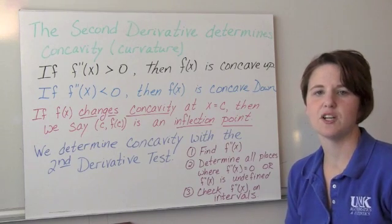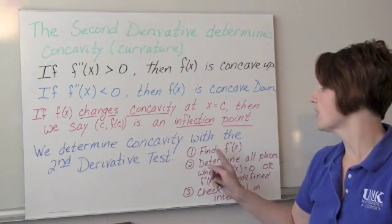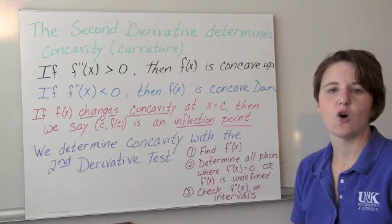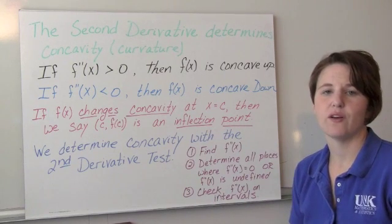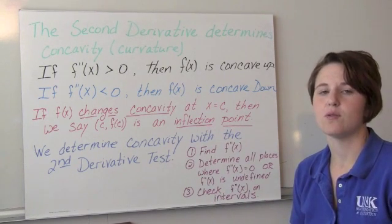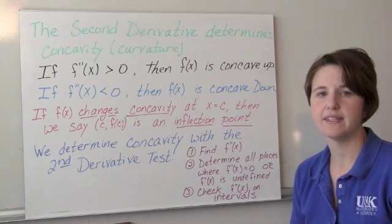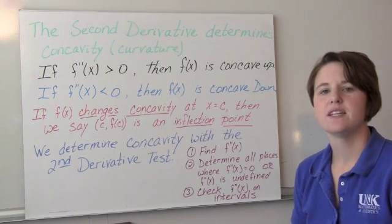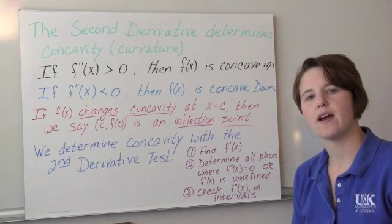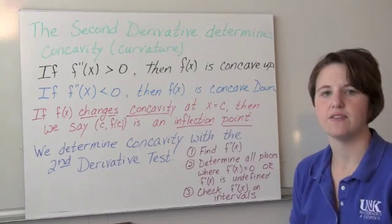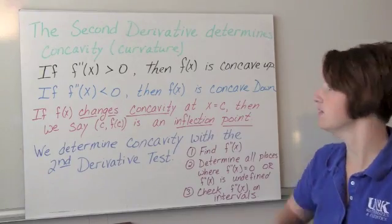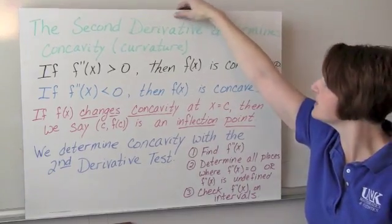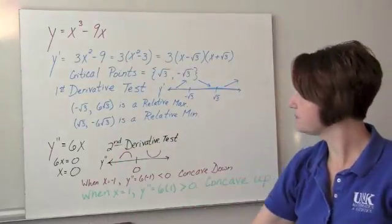The second derivative test is very similar to what we've seen before. We take the second derivative, find where it equals zero or is undefined, and then do test intervals to find where the second derivative is positive and negative. Let's go back to the example we've seen.